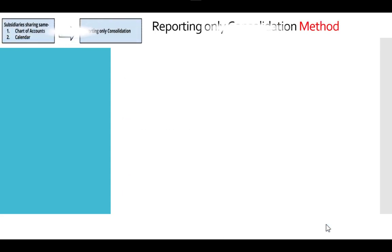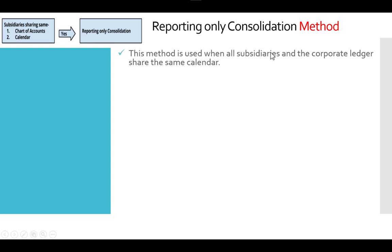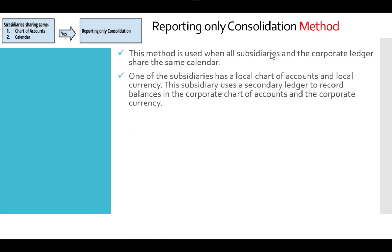The first method is reporting-only consolidation. The condition for this method is that your subsidiaries or ledgers share the same chart of accounts and the same calendar. In this method, all subsidiaries and the corporate ledger share the same calendar. One subsidiary may have a local chart of accounts and local currency — that subsidiary uses a secondary ledger to record balances in the corporate chart of accounts and corporate currency.